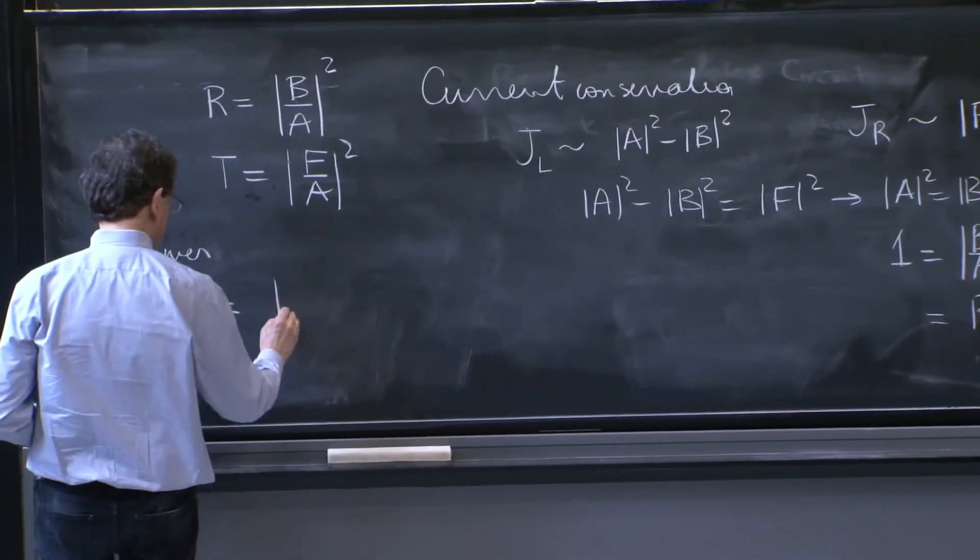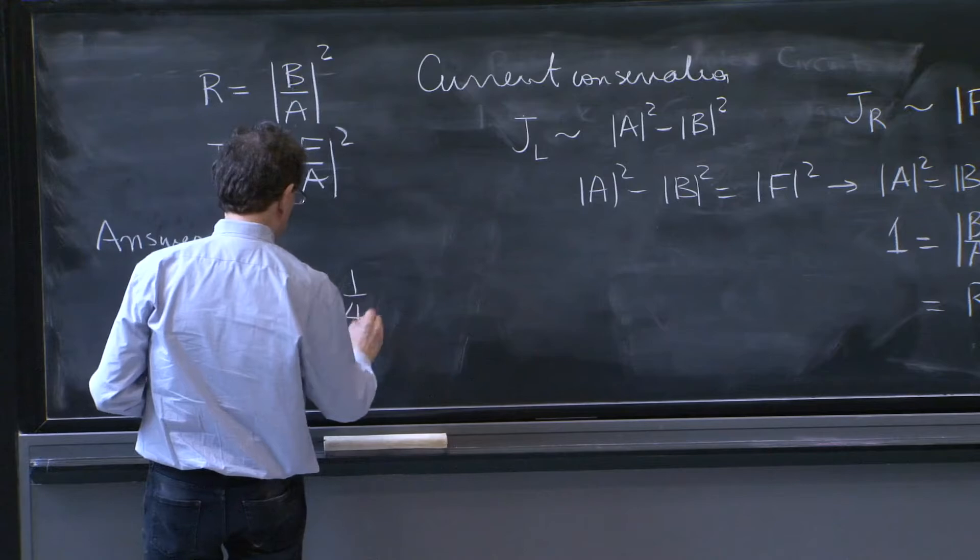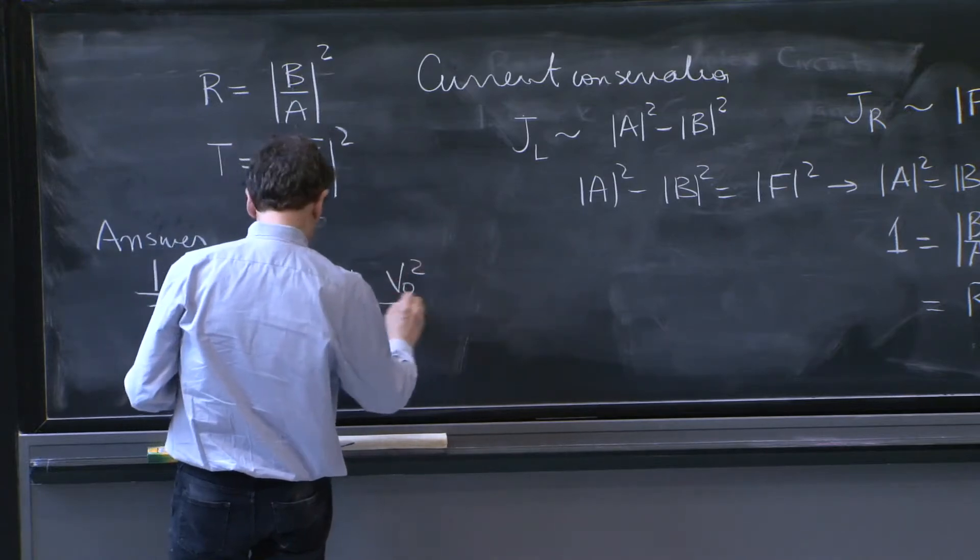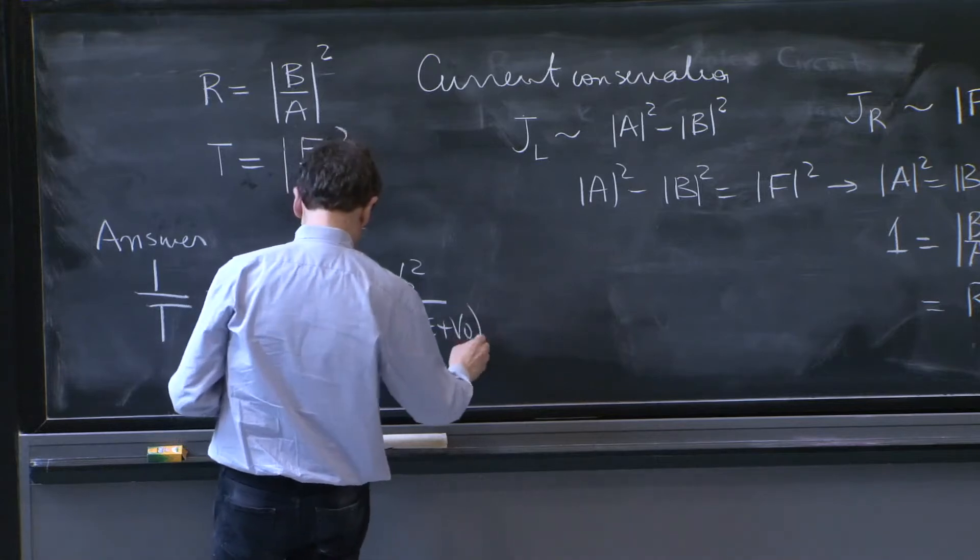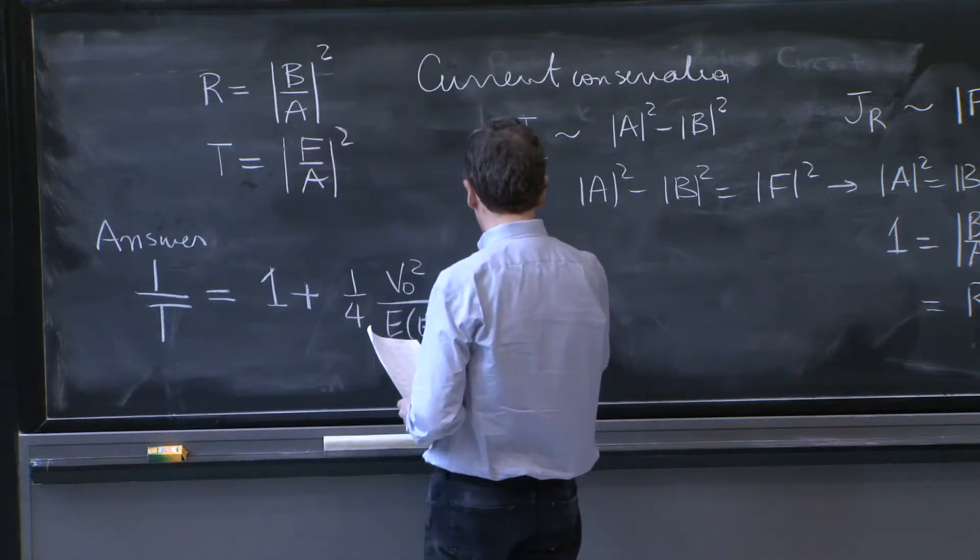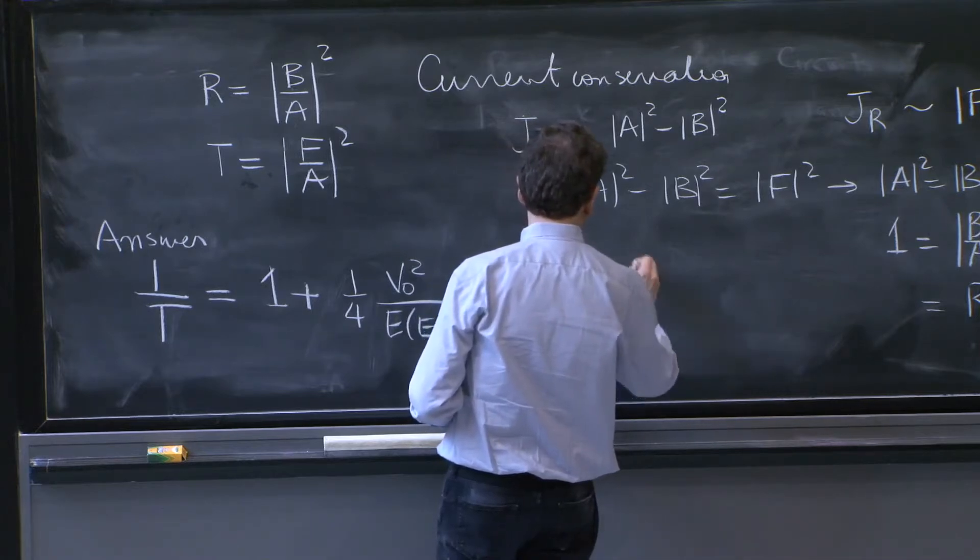And 1 over t is equal to 1 plus 1 over 4 v0 squared over e times e plus v0 times sine squared of 2k2a.